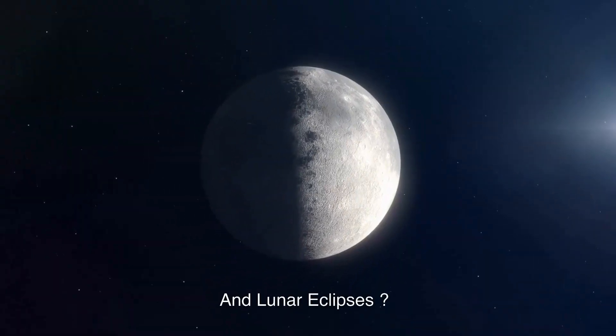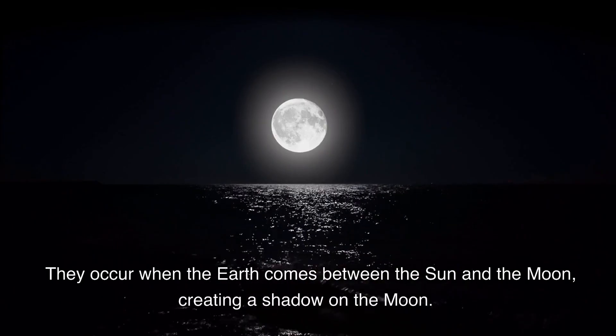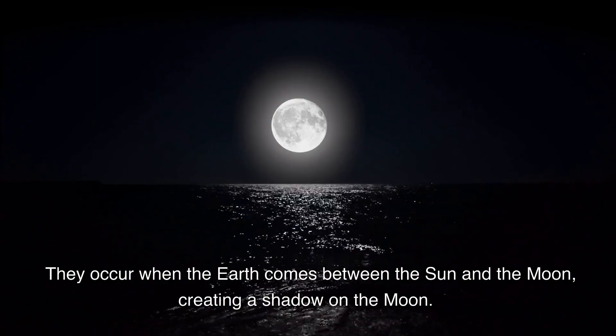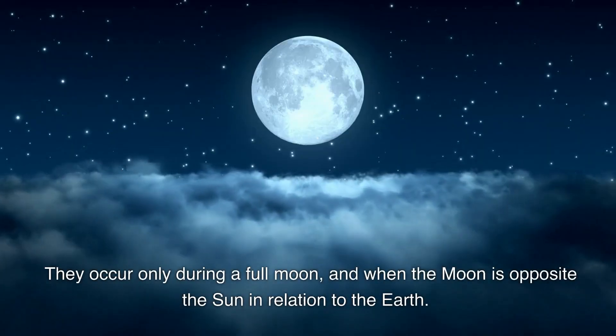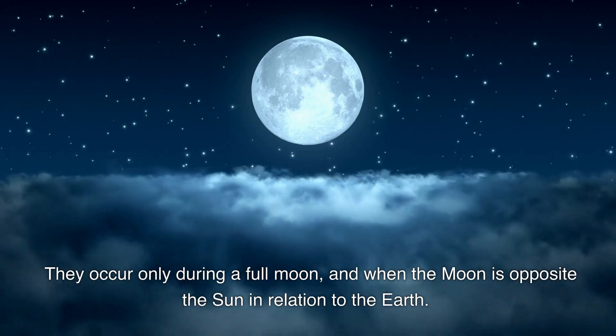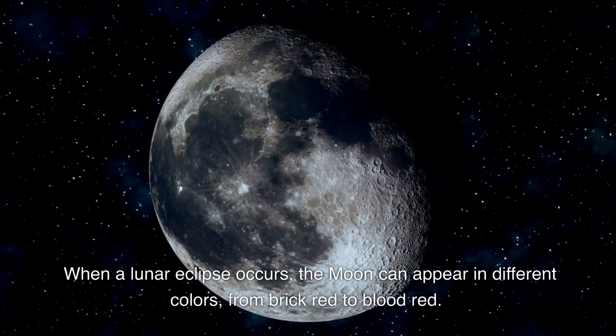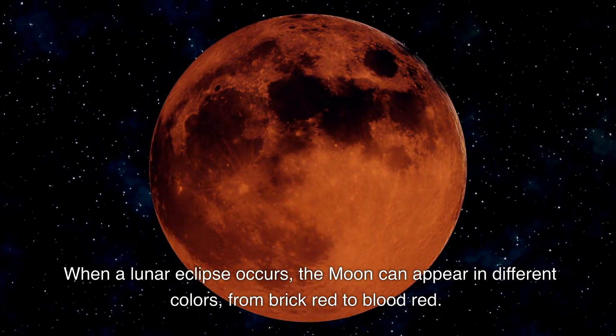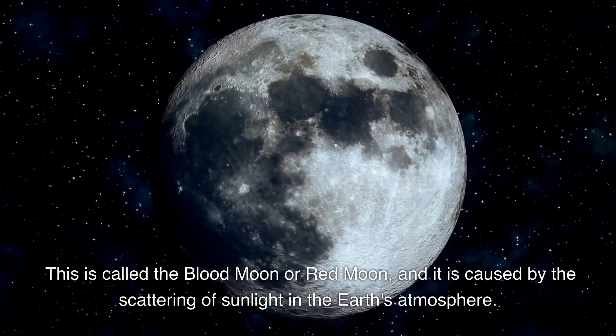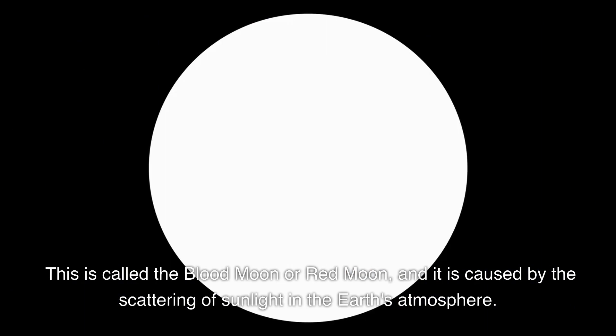And lunar eclipses? They occur when the earth comes between the sun and the moon, creating a shadow on the moon. They occur only during a full moon, and when the moon is opposite the sun in relation to the earth. When a lunar eclipse occurs, the moon can appear in different colors, from brick red to blood red. This is called the blood moon or red moon, and it is caused by the scattering of sunlight in the earth's atmosphere.